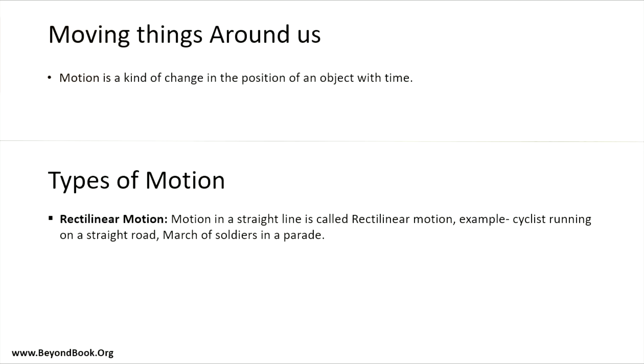Moving on to moving things around us. Motion is a kind of change in the position of an object with time. For example, if I am on a train and someone from outside is seeing me, for that person I am in motion — I am changing my position relative to them.